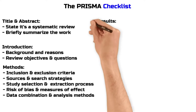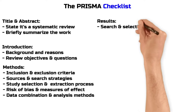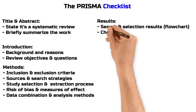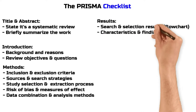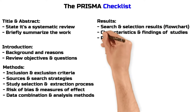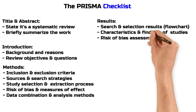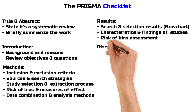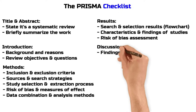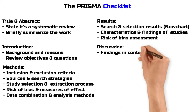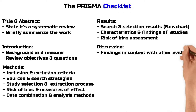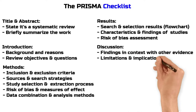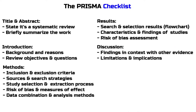Results: document the results of the search and selection process, ideally with a flow diagram. Present the characteristics and findings of the included studies. Assess the risk of bias and certainty of the results. Discussion: interpret the findings in the context of other evidence, discuss the limitations of the evidence and methods, and consider the implications for practice and future research.